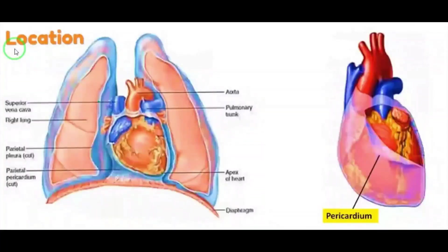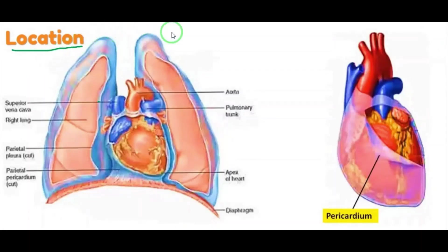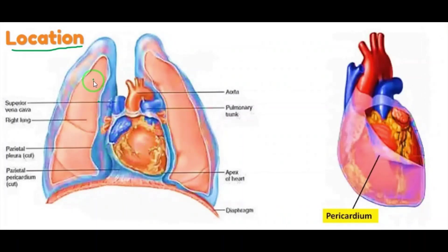First we have to see the location of the human heart. The heart is located in the thoracic cavity — this is the thoracic cavity or chest region. The heart is situated between the lungs, as you can see here.